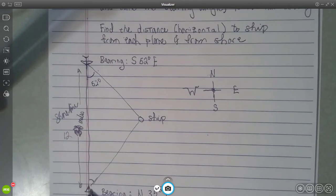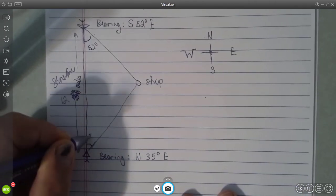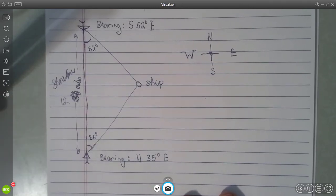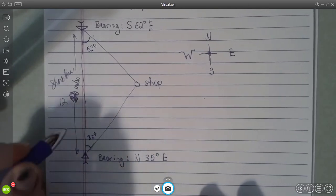And at the same time, this plane down here takes this angle to be 35 degrees, that's north 35 degrees east. So we have this triangle here, and we would like to know a couple of different things.